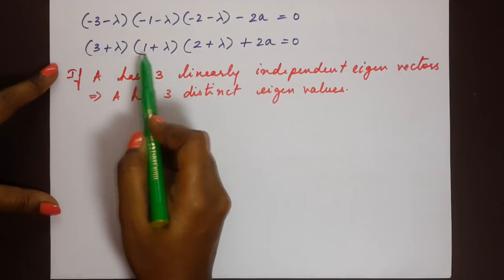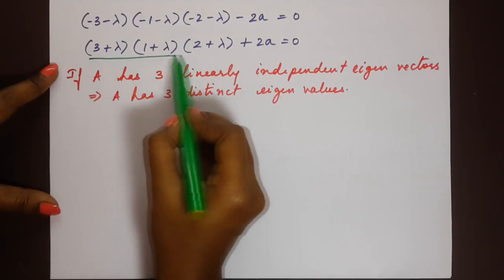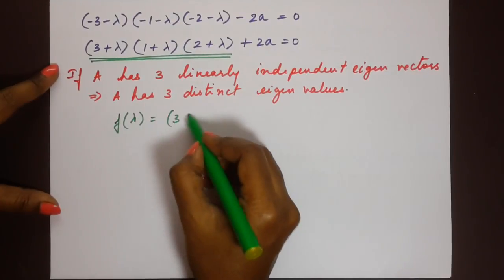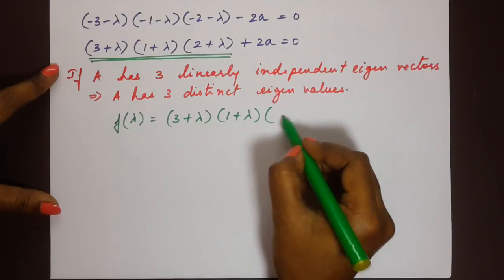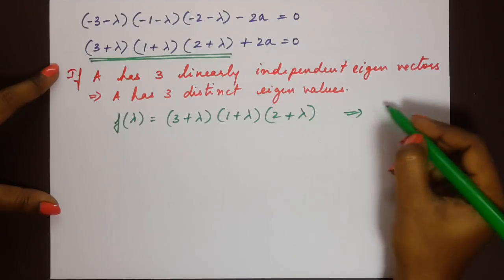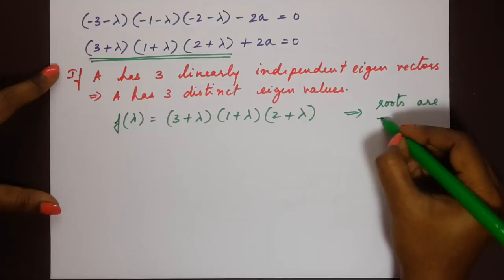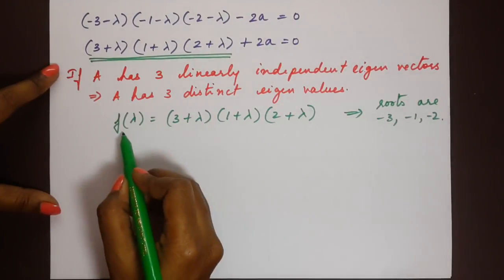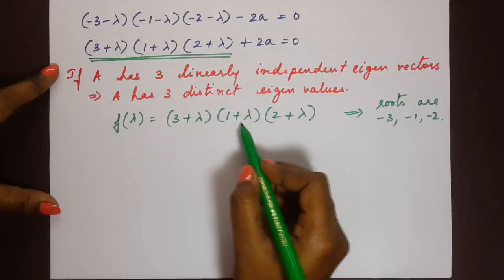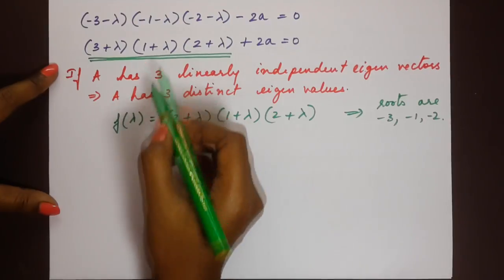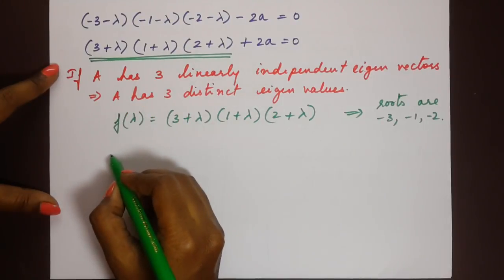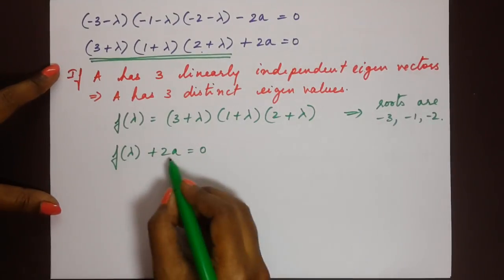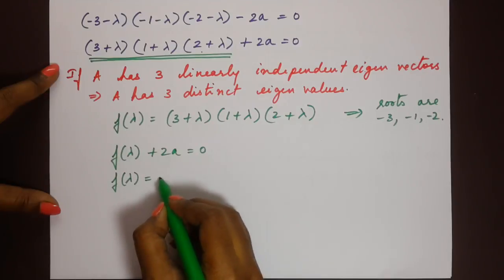We will have lambda equal to minus three, lambda equal to minus one, and lambda equal to minus two. Let's define f of lambda as three plus lambda, times one plus lambda, times two plus lambda. Substituting into the characteristic equation gives f of lambda plus two A equals zero, so f of lambda equals minus two A.